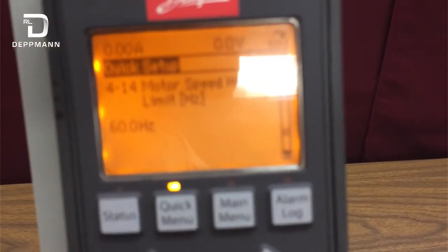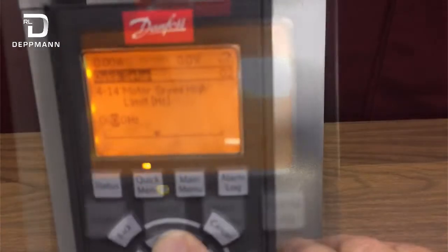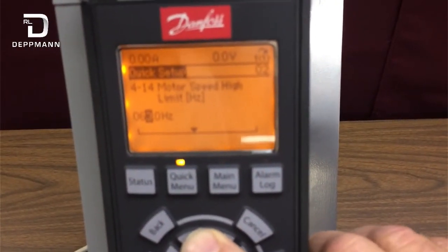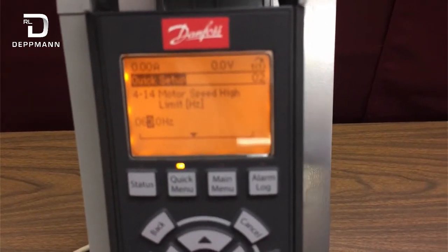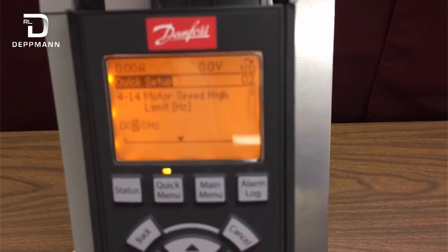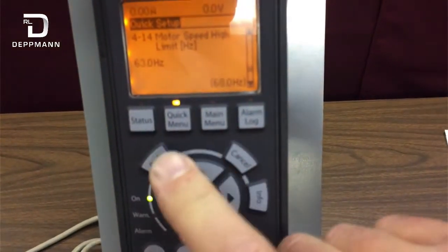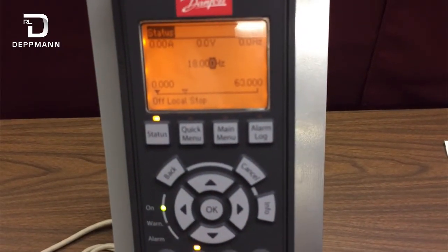So when I push the OK button, that moves the cursor to the last digit. We're going to change that and scroll up to 63, a maximum of 63 Hz. Once I have that set, I'll push the OK button. That accepts the new parameter, and now we can go back until we get to the main screen.